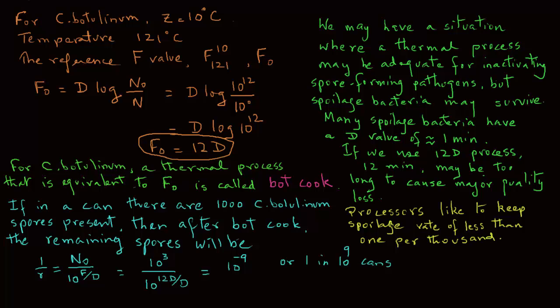Processors generally like to keep the spoilage rate of less than 1 per 1,000 cans. Of course, the process must meet the requirements for food safety, so it must be equivalent to the bot cook. We will consider the design of a process based on the botulinum cook, as well as to minimize spoilage in another tutorial.